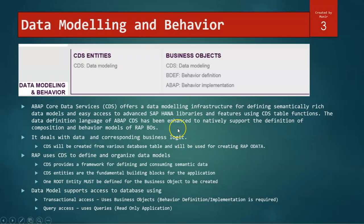Let's dive into the first section called data modeling and behavior. Data modeling is mainly done using CDS. CDS offers a modeling structure that is used to create semantically rich data models using SAP HANA libraries or table functions. The data definition language of ABAP CDS has been enhanced to natively support the definition. It deals with the corresponding business logic, so CDS will be created from various database tables and will be used for creating the RAP OData. RAP uses CDS to define and organize the data models. It provides a framework for defining and consuming semantic data. CDS are the main fundamental blocks for the application.